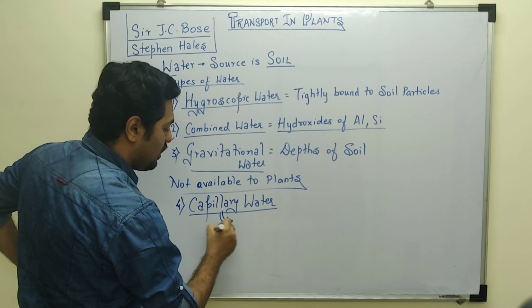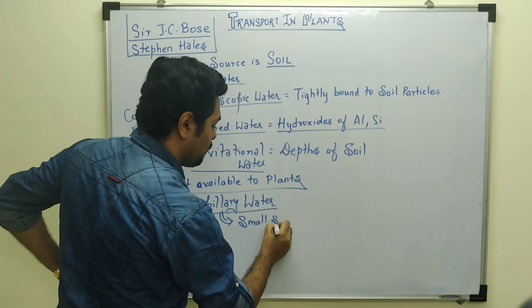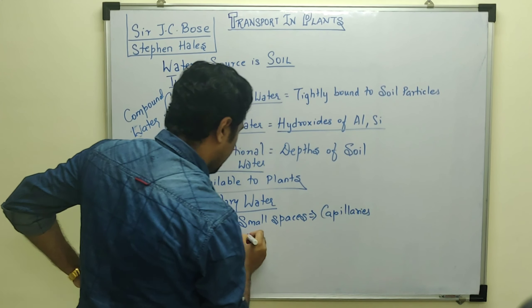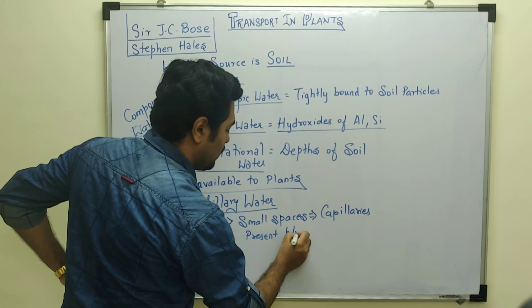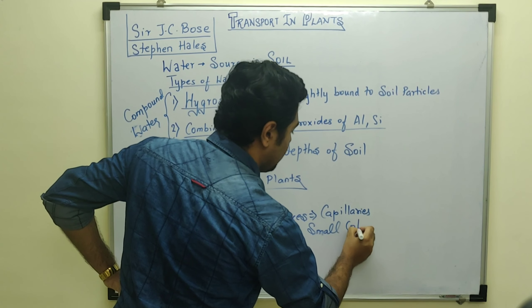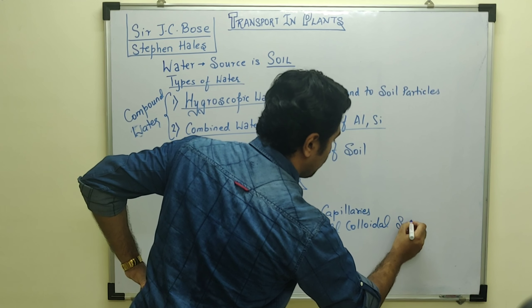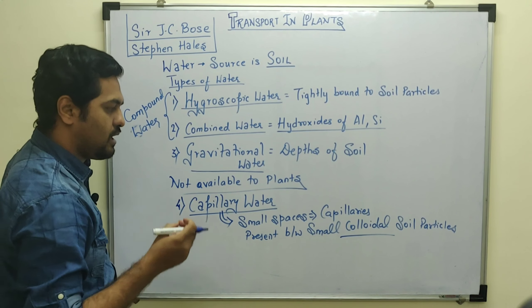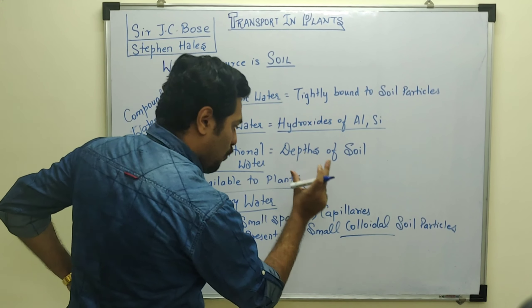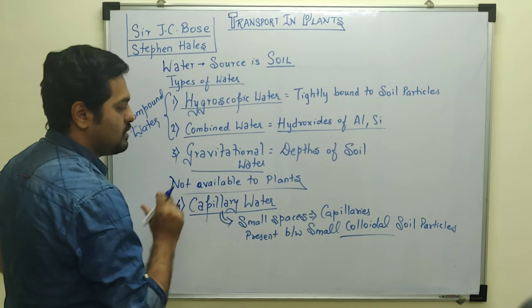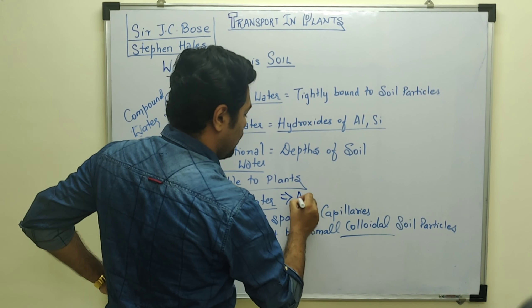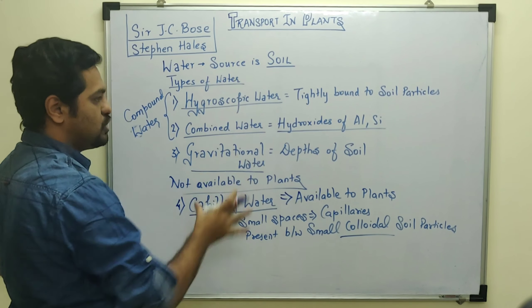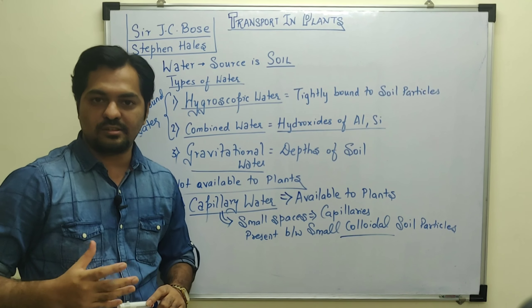The only type of water which is available to the plants from the soil source is capillary water. Capillary water is held in small spaces known as capillaries, which are present between small colloidal soil particles. So capillary water is the only one available to plants. This covers the types of water in soil and which one is accessible to plants.